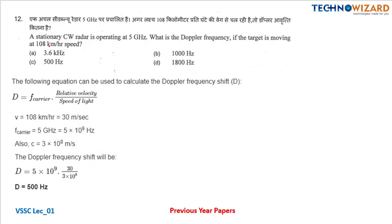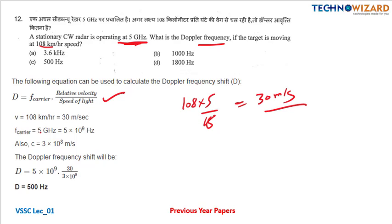Question number twelve: a stationary CW radar operating at 5 gigahertz. Doppler frequency equals F carrier times relative velocity divided by speed of light. Velocity is 108 km/h, converted to 30 m/s. Carrier frequency is 5 into 10 to the power 9 Hz and speed of light is 3 into 10 to the power 8 m/s. Putting the values gives Doppler frequency equal to 500 hertz as the correct answer, option C.